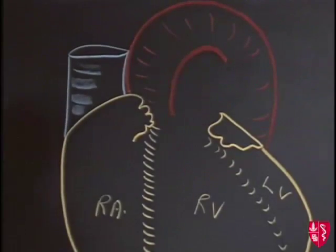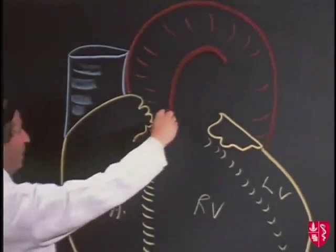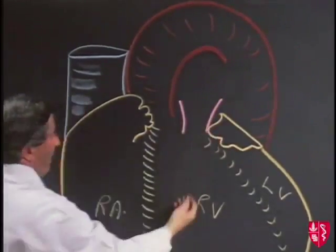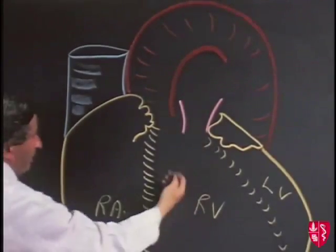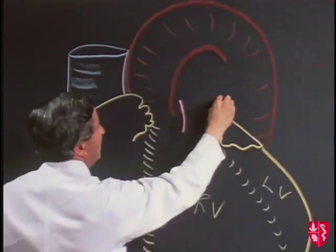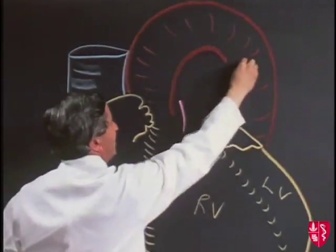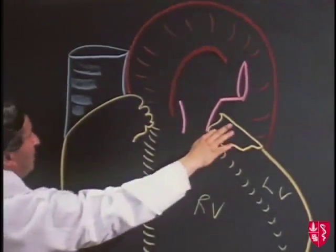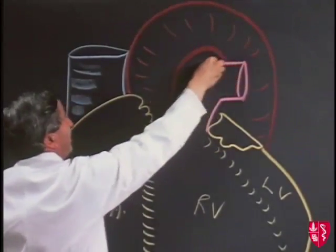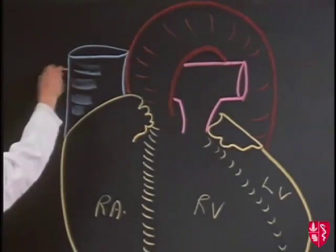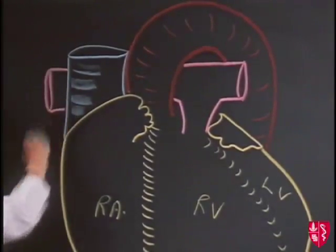Just to indicate in a slightly different color the position of the pulmonary trunk, which is emerging from the upper end of the right ventricle — this is the infundibulum — we have the pulmonary trunk, which almost immediately divides into the left pulmonary artery and the right pulmonary artery, and so we can show it coming over in this direction.